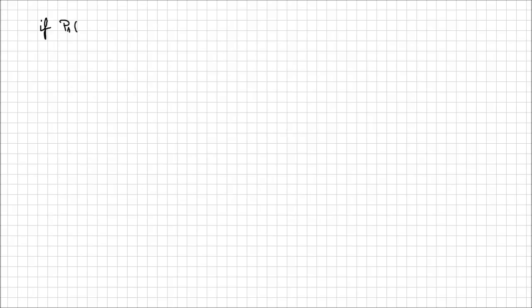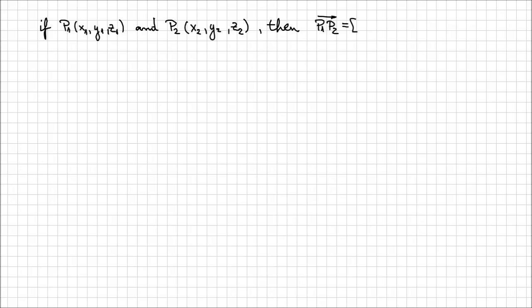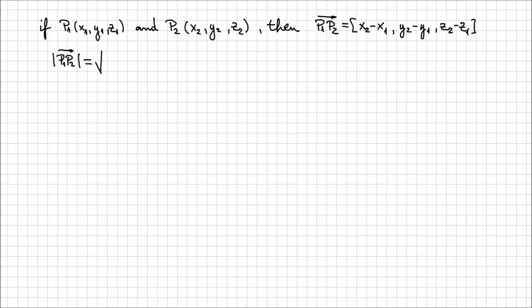If we have two points P1 of coordinates (x1, y1, z1) and P2 of coordinates (x2, y2, z2), then the vector P1P2 in algebraic format is (x2−x1, y2−y1, z2−z1). This is not a position vector — it doesn't start at the origin; it starts at any point and ends at any point. The magnitude of vector P1P2 is the square root of (x2−x1)² + (y2−y1)² + (z2−z1)².